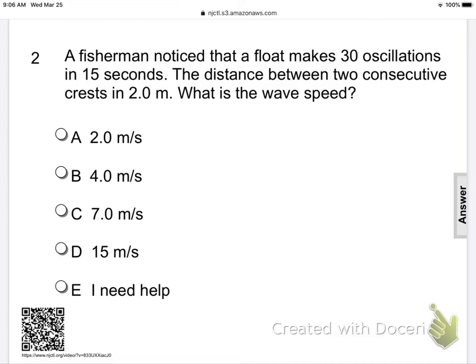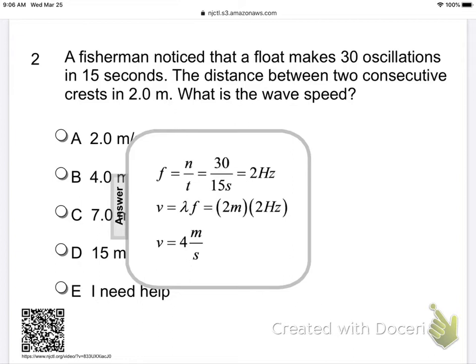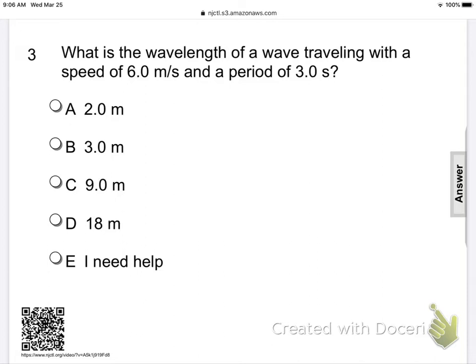A fisherman noticed that a float makes 30 oscillations in 15 seconds. Oscillations per time is known as frequency. So the frequency is 30 oscillations over 15 seconds, which is a frequency of 2 hertz. The distance between two consecutive crests is 2 meters. That's lambda. We first solve our frequency by n over T, then plug it into velocity equals lambda f, and we come out with a velocity of 4 meters per second.